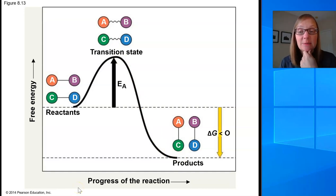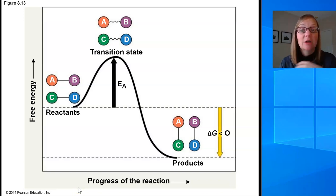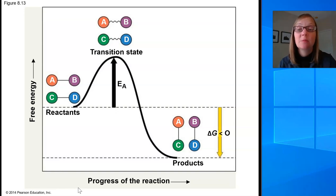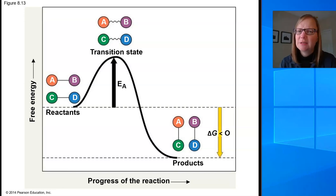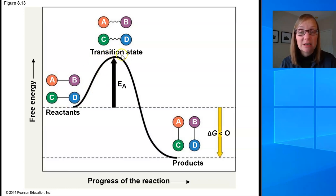So the reason why ATP doesn't simply fall apart inside the cell — even though hydrolysis of ATP is an exergonic process — is because ATP molecules on their own never absorb enough thermal energy to reach the transition state for the bond to be broken. But the cell still needs to use the energy stored in ATP to drive cellular work, so how does it get ATP to reach that transition state to hydrolyze it into ADP and inorganic phosphate and release energy?